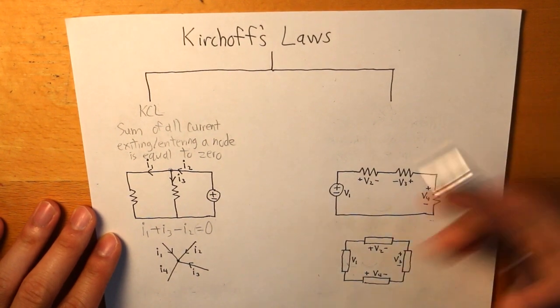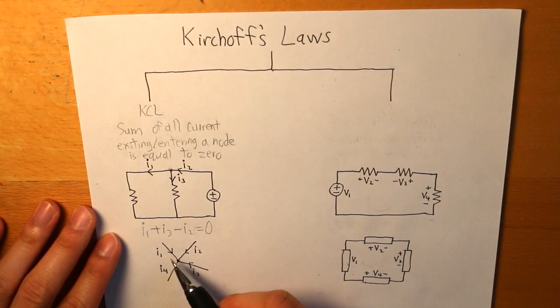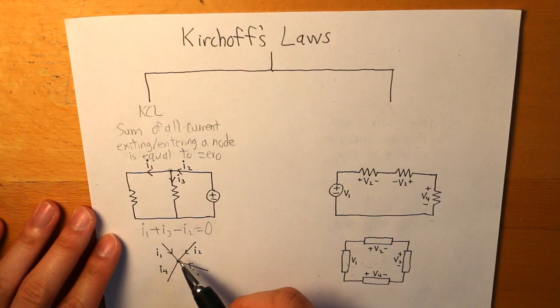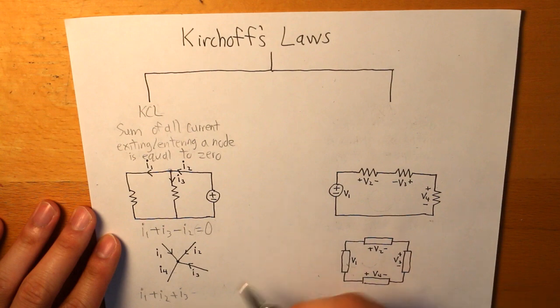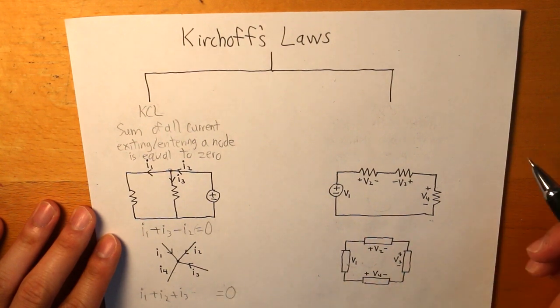And we can assume that when it is entering that node it would be considered positive. So what that is is that it is I1 plus I2 plus I3. And we're going to leave a blank right here and put this to equal to zero.